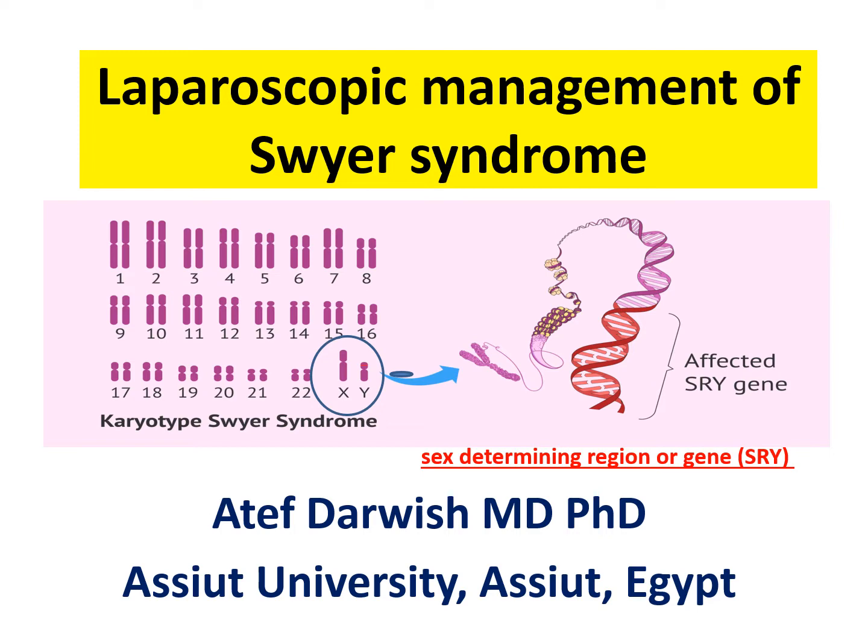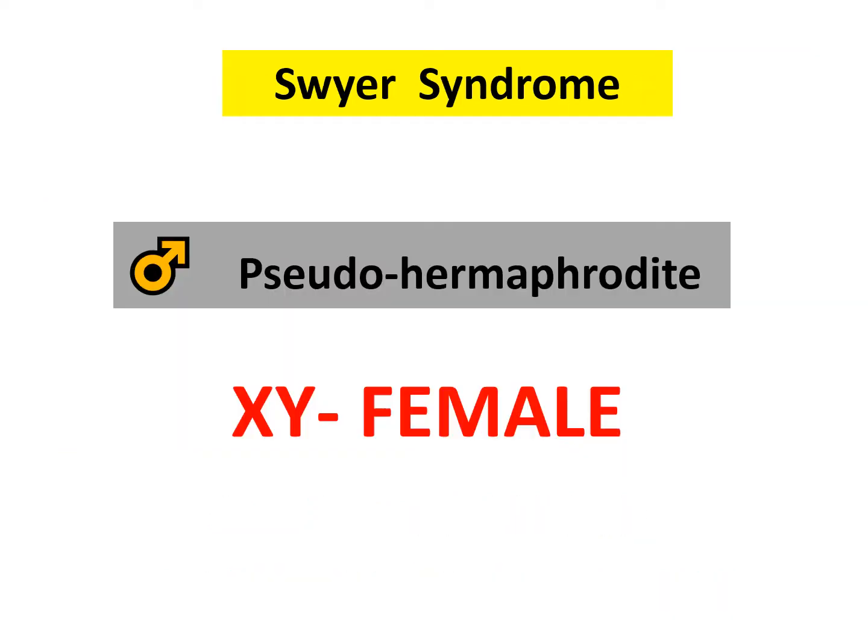Swyer syndrome is a mutation in the sex-determining region, or SRY gene, which is located on the short arm of the Y chromosome of male individuals. Swyer syndrome is also called XY female because the appearance of this individual is female, but genotypically this individual is XY, and it is a form of male pseudohermaphrodite.